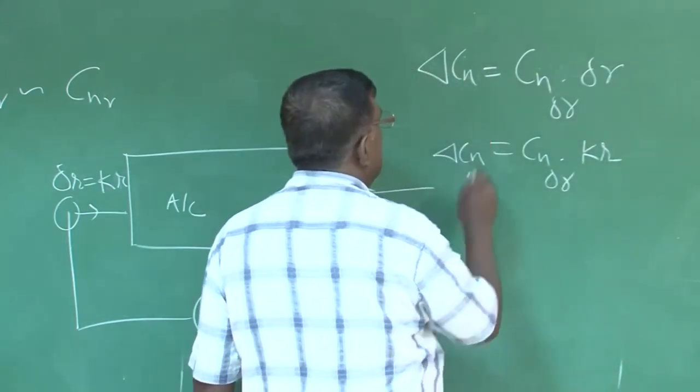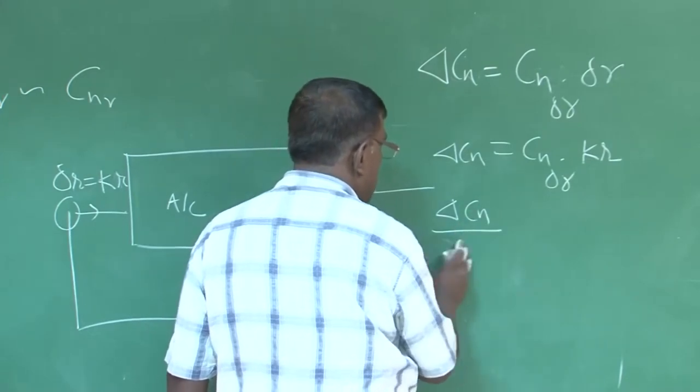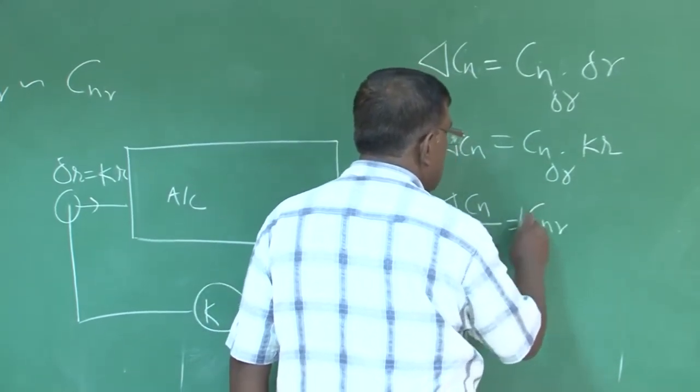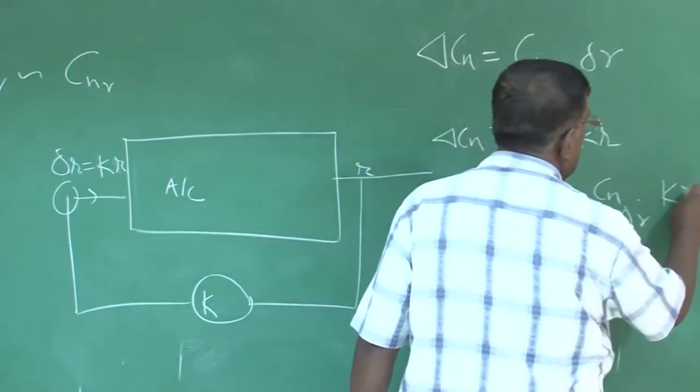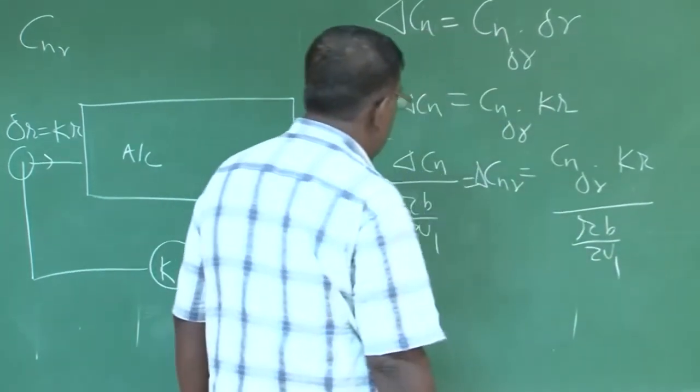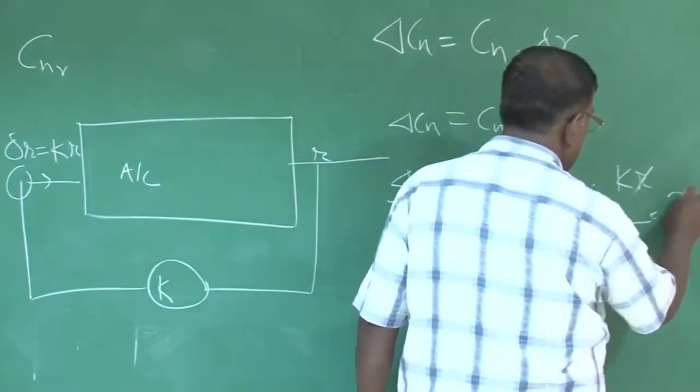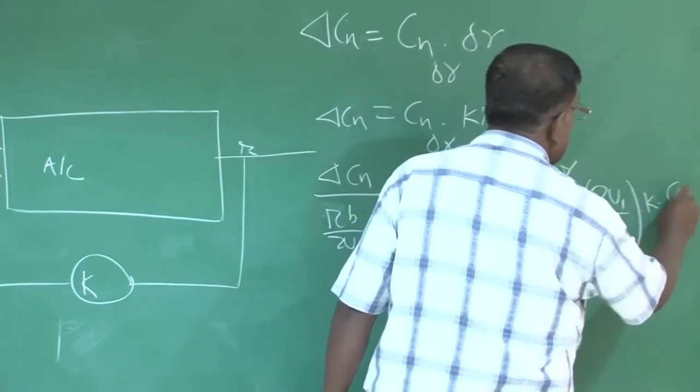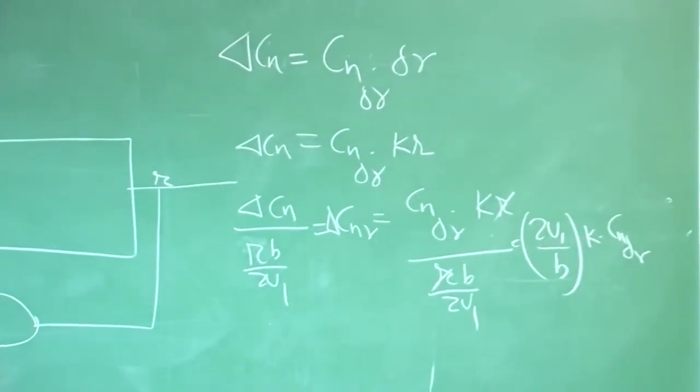how much delta c n this will introduce? That will be c n delta r into delta r and this is equal to c n delta r into kr. This is delta c n. So, I divide delta c n by r r b by 2 u 1. So, this r r gets cancelled. So, you have 2 u 1 by b k into c n delta r. So, that is the additional c n r you have to generate through SAS.